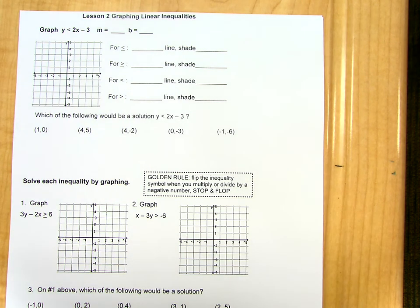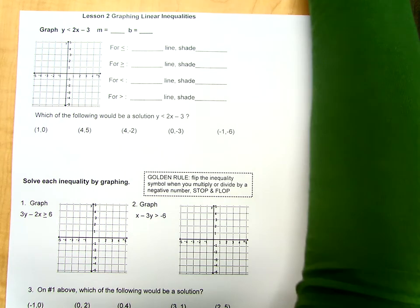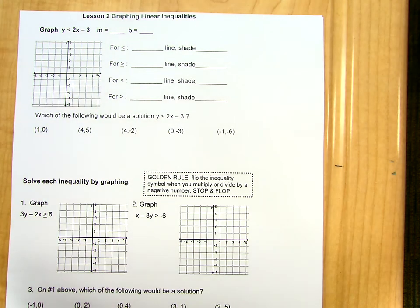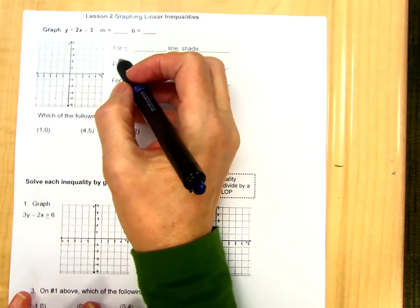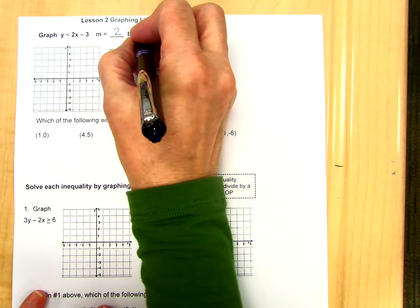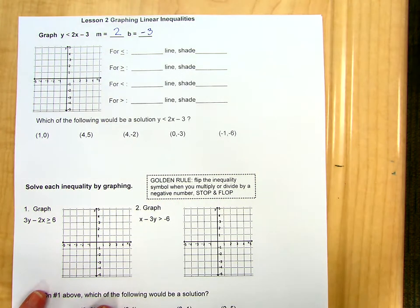In this video, we are going to be looking at graphing linear inequalities. We have the inequality y is less than 2x minus 3. So first we identify the slope as 2 because that's the coefficient of the x term, and our y-intercept is negative 3.